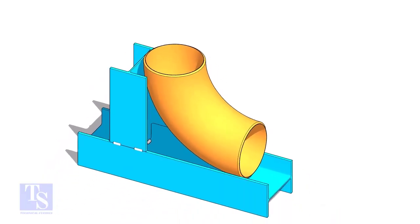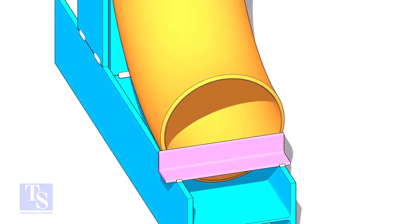Tack weld a piece of angle bar or a piece of a plate at the bottom side of the jig to arrest the elbow.